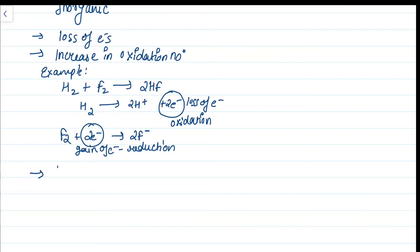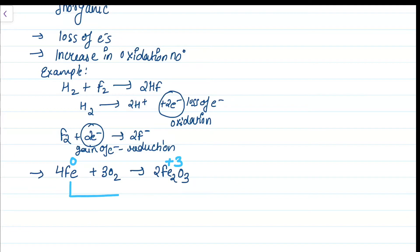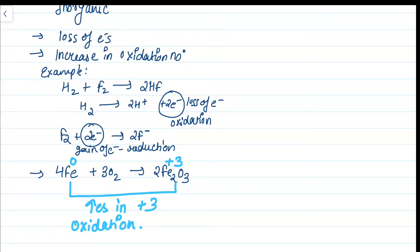Another example: 4Fe + 3O2 → 2Fe2O3. Iron has 0 oxidation state in elemental form, and in Fe2O3 iron has +3 oxidation state — it goes from 0 to +3, an increase by +3. Therefore this is again oxidation.